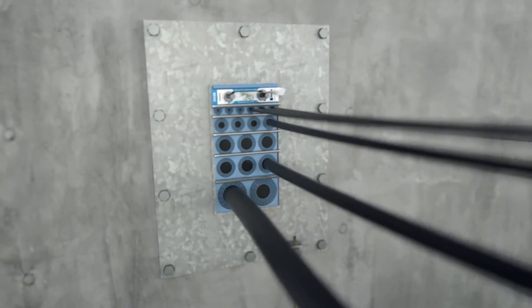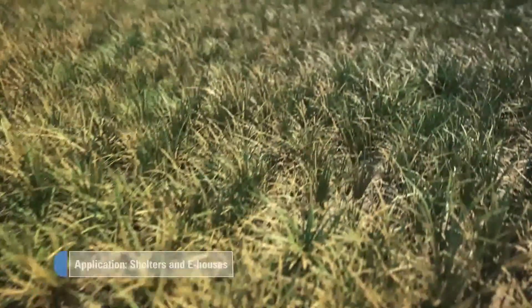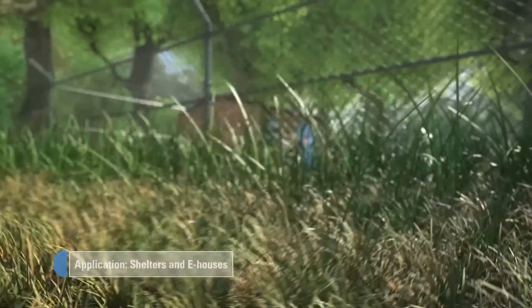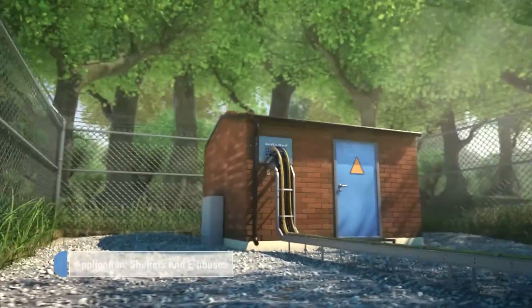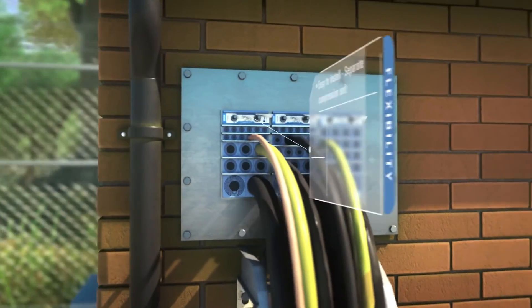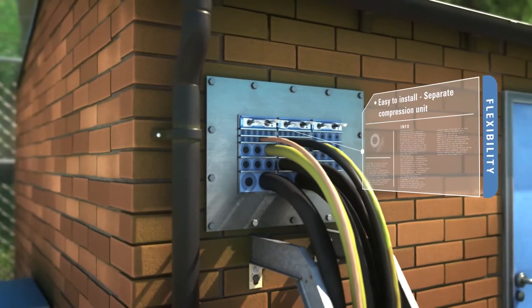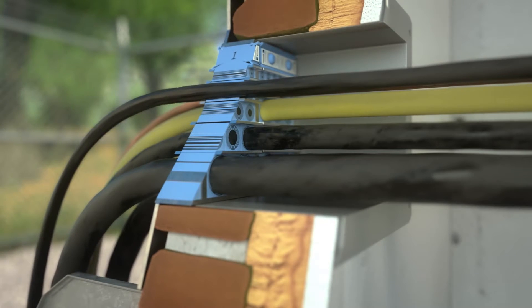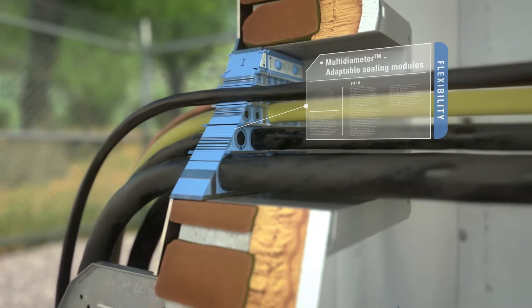There are many application areas for Rockstex solutions with bolted frames. You can use them in shelters and e-houses. The mechanical seals are quick and easy to install and fit cables and pipes of different sizes.